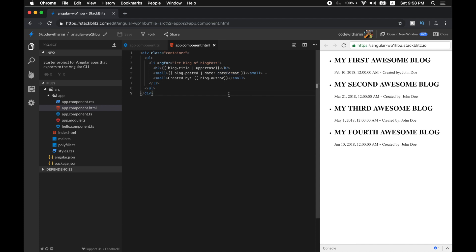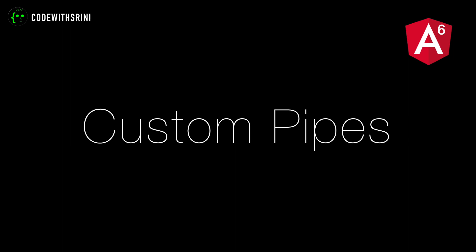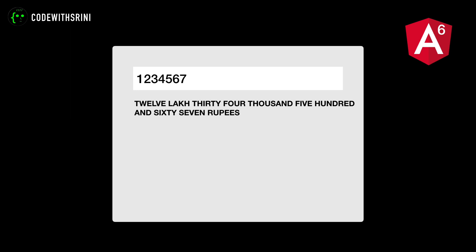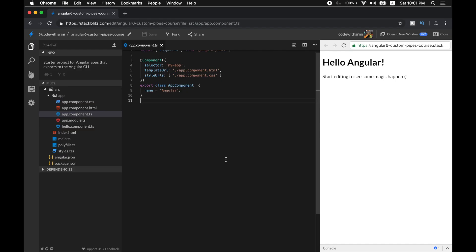Just like built-in pipes, you can write your very own custom pipes that may be needed in part of your application. I was doing a simple EMI calculator that dealt with currency as input — I want to input a value like 1234567 and my custom pipe should transform that into 12 lakh 34 thousand 5 hundred and 67 rupees. Let's begin — you can use Angular's built-in CLI generators to create a pipe.